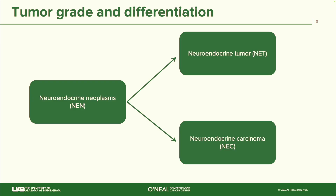Think of neuroendocrine neoplasms as an umbrella term. Neuroendocrine neoplasms consist of neuroendocrine tumors and neuroendocrine carcinomas. Neuroendocrine tumors are the grade one, grade two, and grade three types, while neuroendocrine carcinomas are usually the poorly differentiated types of cancers.